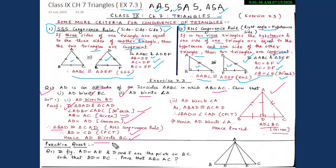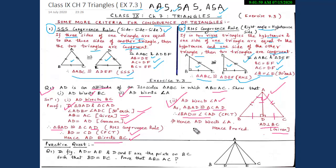For Part 2, since triangle BAD is congruent to triangle CAD, by CPCT we can say that angle BAD equals angle CAD. Since both these angles are equal, AD bisects angle A. Hence proved.